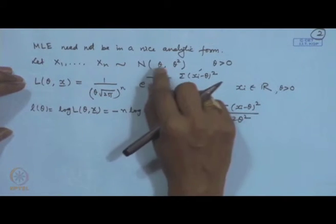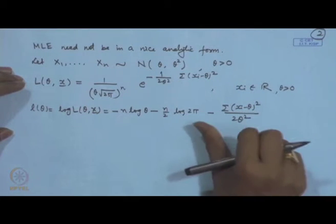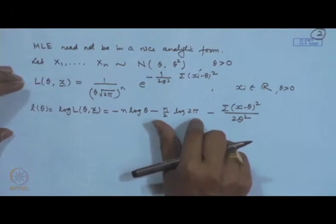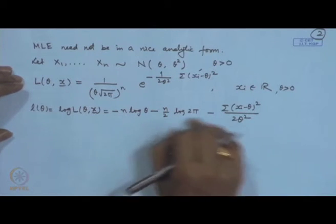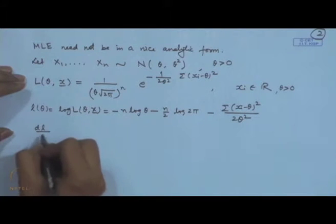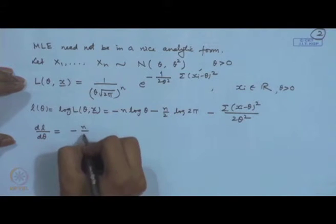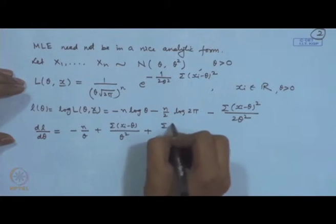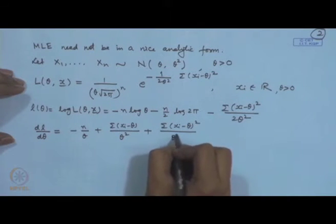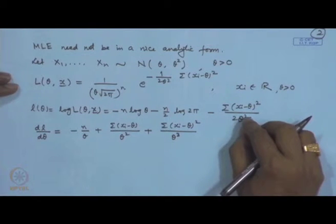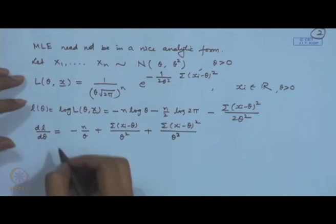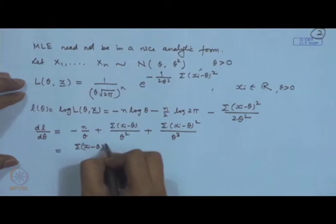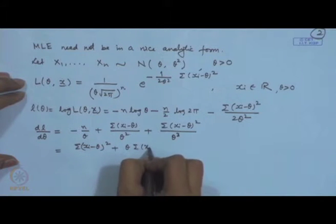There is a difference from the situation when we had considered mu and sigma squared separately as two parameters. Now since mu has been replaced by theta, this is a consolidated function of theta, and we have to maximize it with respect to theta. This is a differentiable function, so we can use the usual calculus procedure. The derivative dL/dθ equals −n/θ + Σ(xi−θ)/θ² + Σ(xi−θ)²/θ³, which simplifies. We can write this as [Σxi² − nθx-bar − nθ²] / θ³.